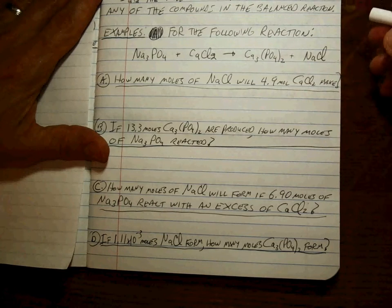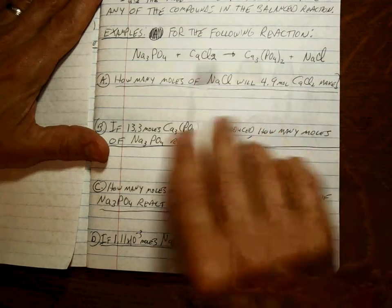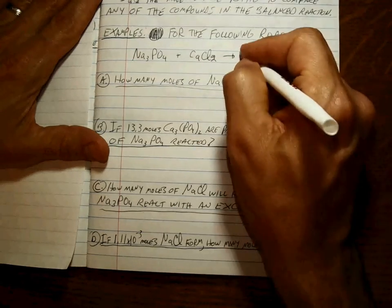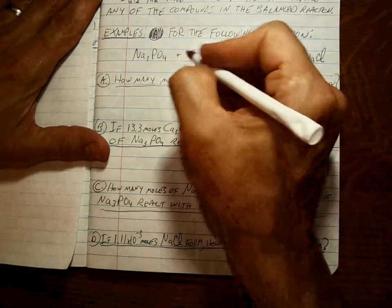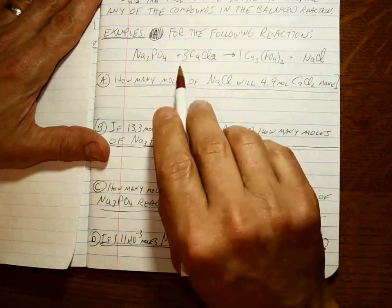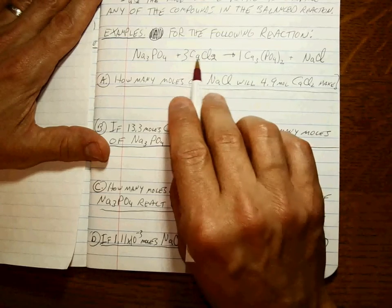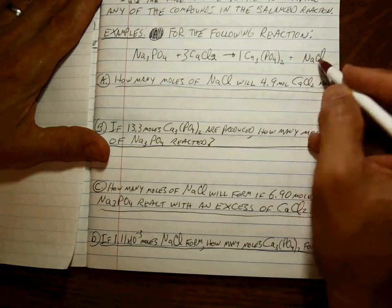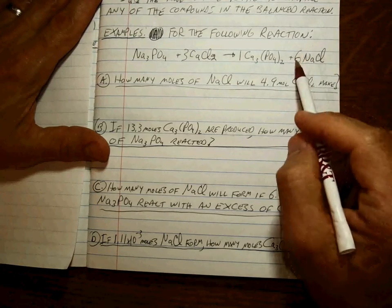Okay, most complicated molecule, we're going to call it this one. Should be quick. If there's one of these, that means there's three calciums. The only place there's calciums here is three. If there's three CaCl2s, that means there's six chlorines. The only place chlorines is here, so that has to be a six.